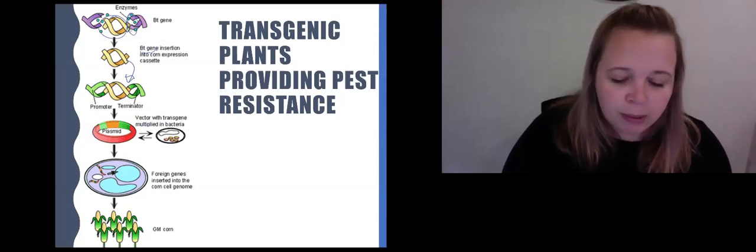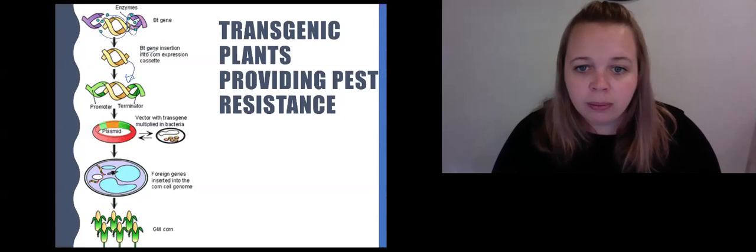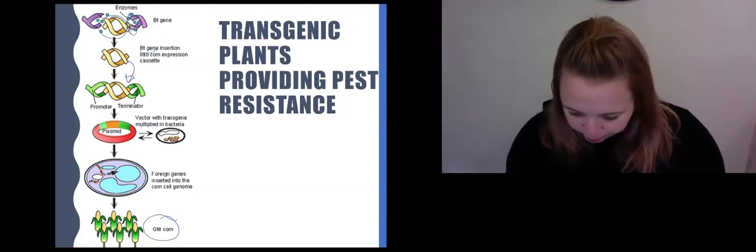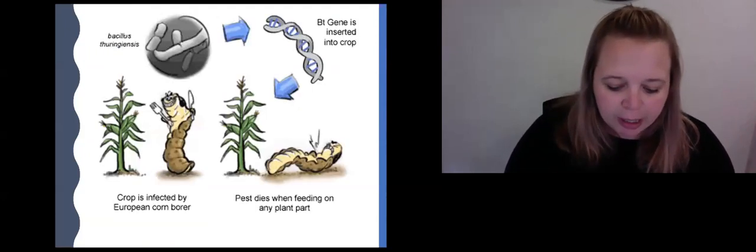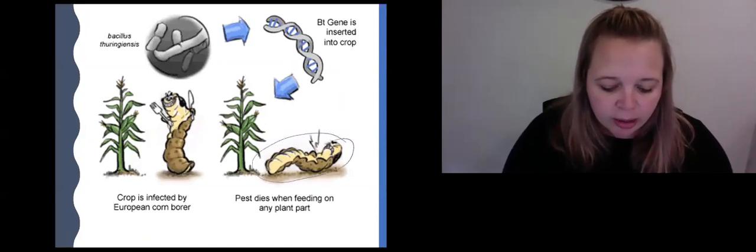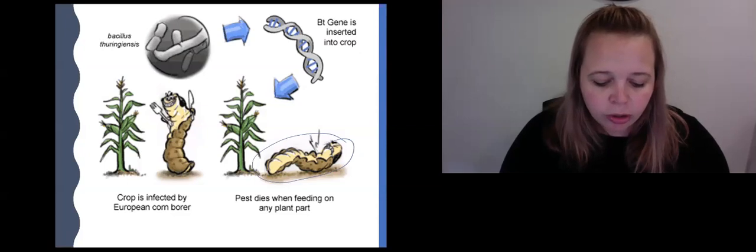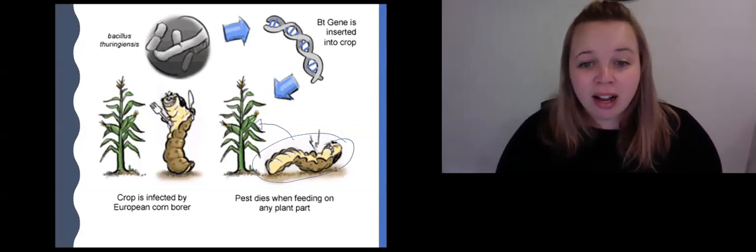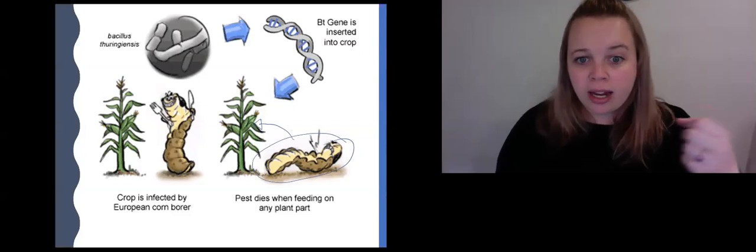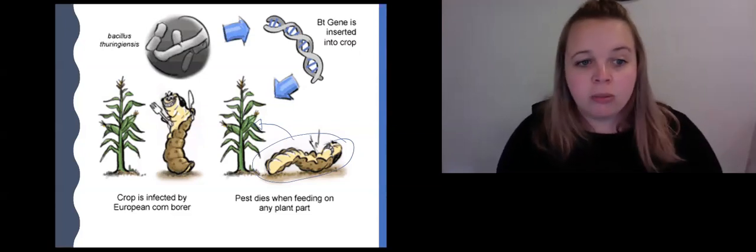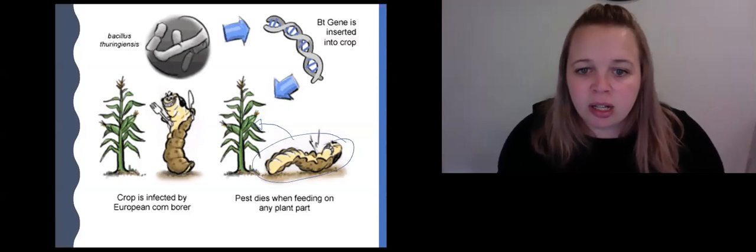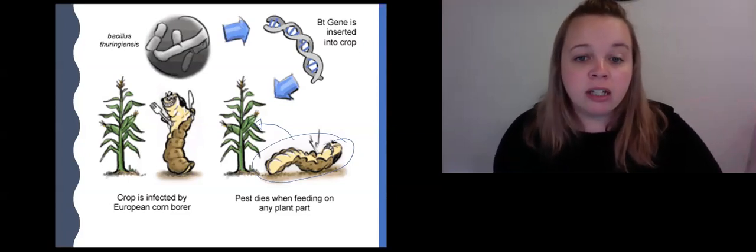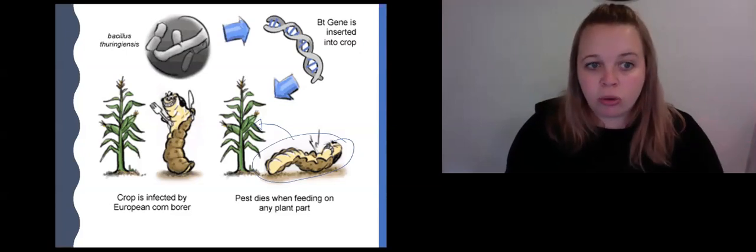You put it into a bacterium plasmid, then you use those to insert them into the corn genome like we did just before. And what you end up with is this GM corn that produces a BT toxin. When a corn borer goes to eat the plants, which you don't want them to eat the plant because they're going to destroy your crops, they are going to die because that plant has now producing a toxin that is completely harmless to humans but very toxic to these pests. And that's a really big thing because that means you can grow your crops in a field and you don't have to worry about these insects coming to destroy your crops.